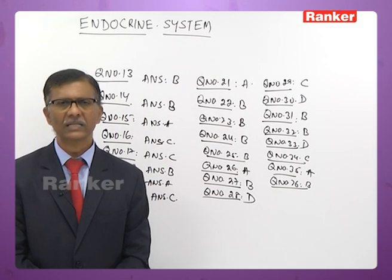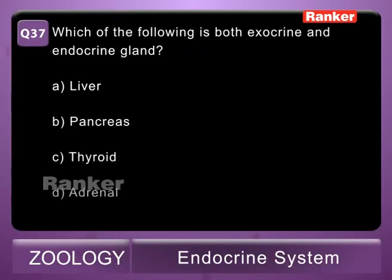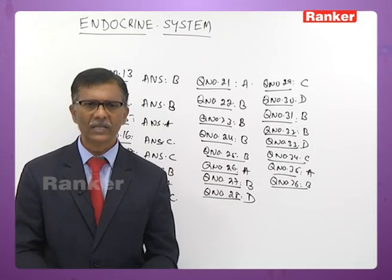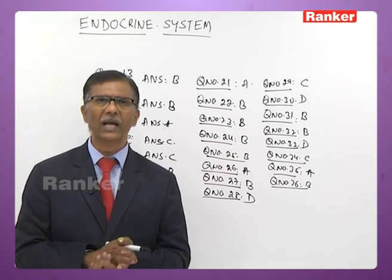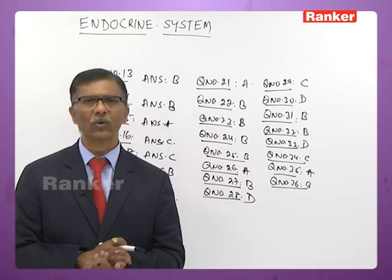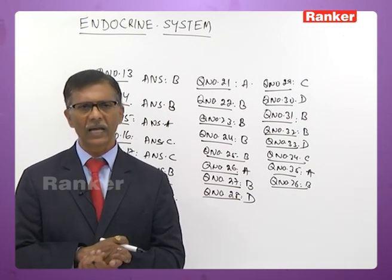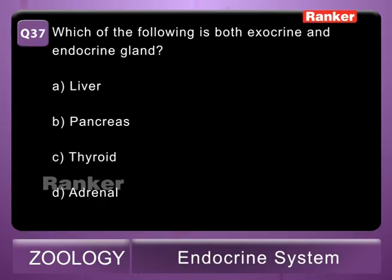Thirty-seventh question: which of the following is both an exocrine and endocrine gland? A - liver, B - pancreas, C - thyroid, D - adrenal. Pancreas is known as an exocrine and endocrine gland (heterocrine or mixed gland) because it secretes both hormones and enzymes. The correct answer is B — pancreas.